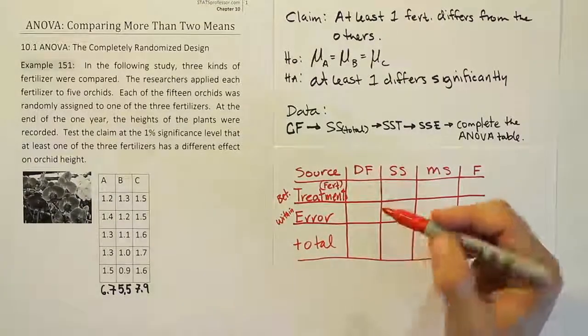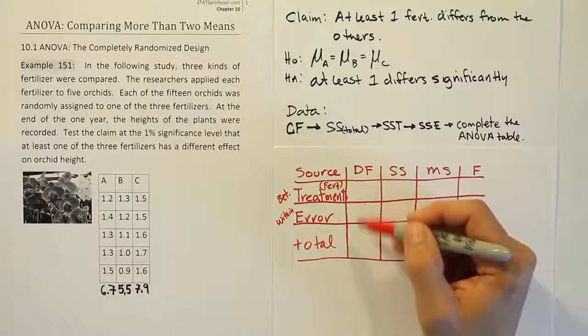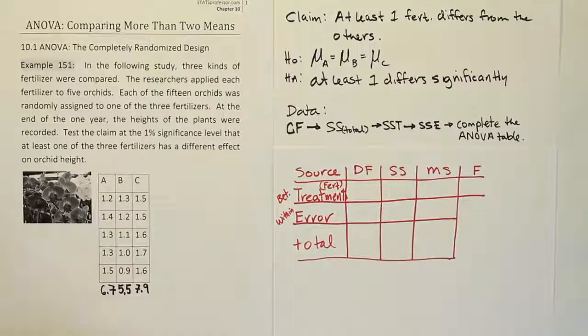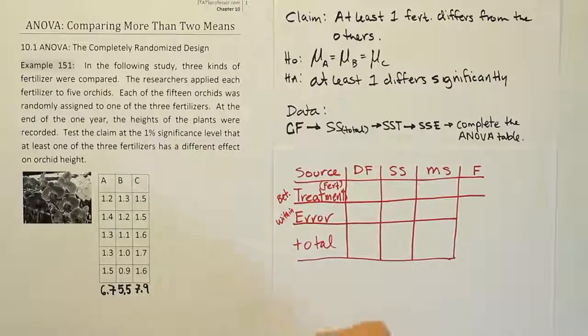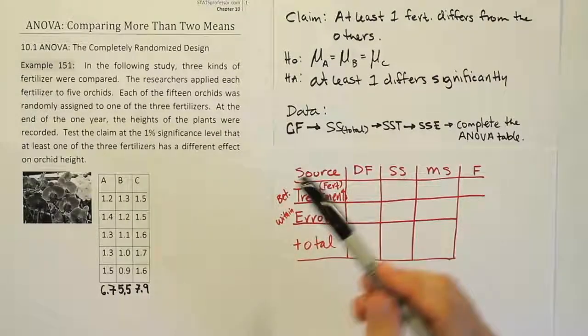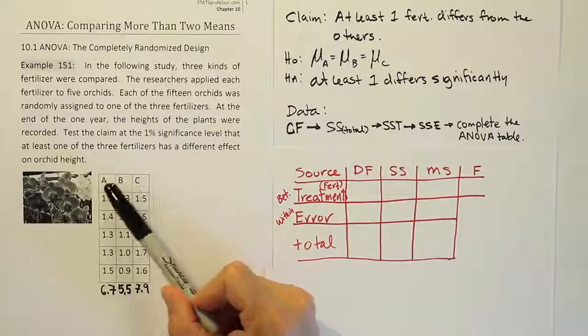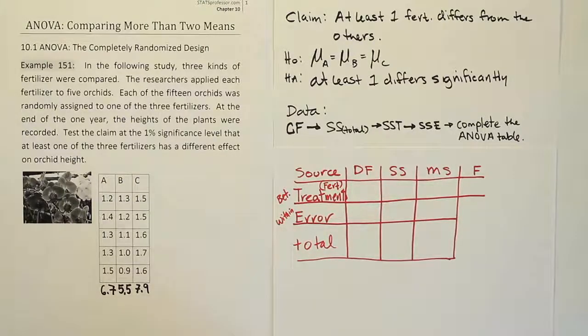Now, from there, we're going to have the degrees of freedom for these items. So let's fill those things in. So we're going to fill in all the details for our problem. Now, in our case, the degrees of freedom for the treatments is just the number of treatments, which is K, minus one. So the number of treatments minus one here would be two.